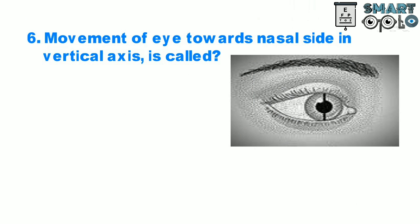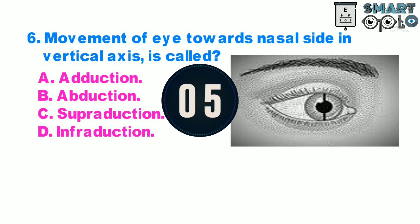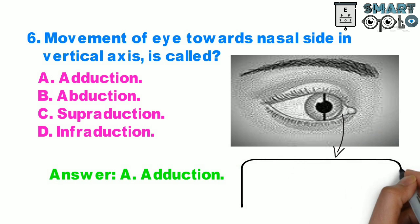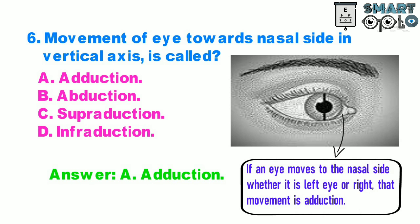Question 6. Movement of the eye towards the nasal side in the vertical axis is called: A. Adduction, B. Abduction, C. Supraduction, D. Infraduction. If an eye moves to the nasal side, whether it is the left eye or right, that movement is called Adduction.